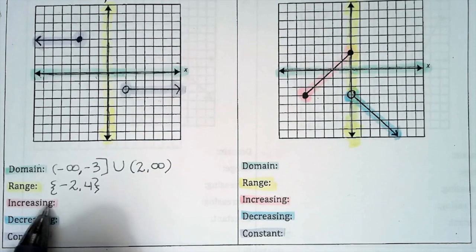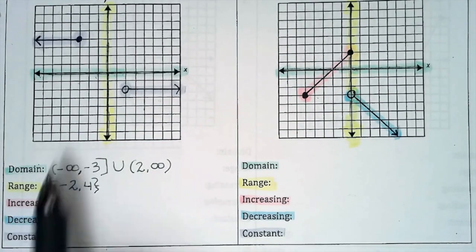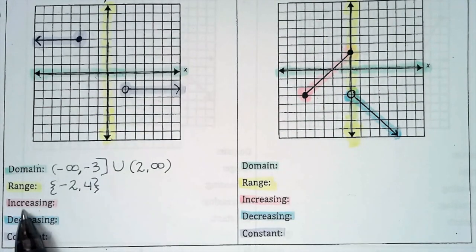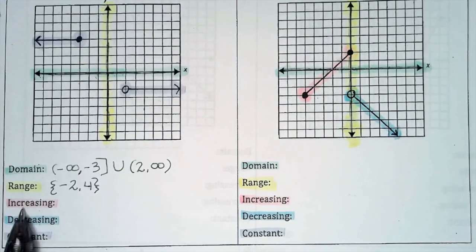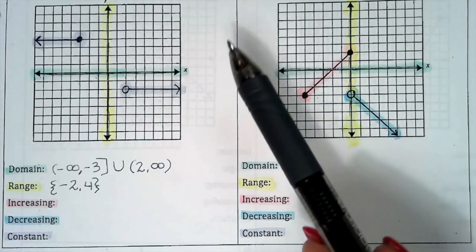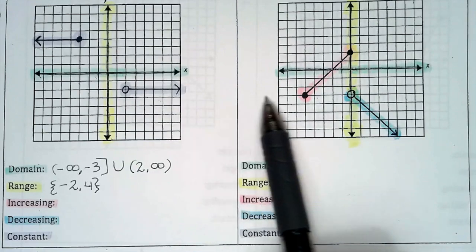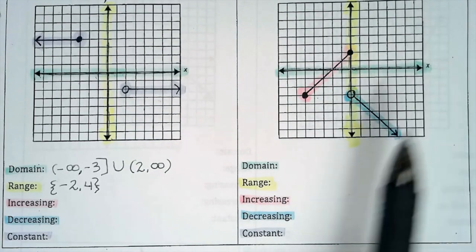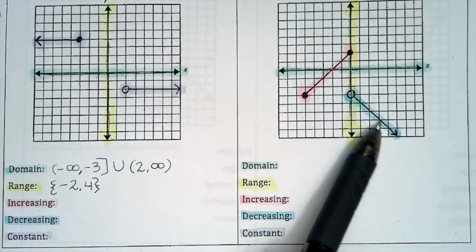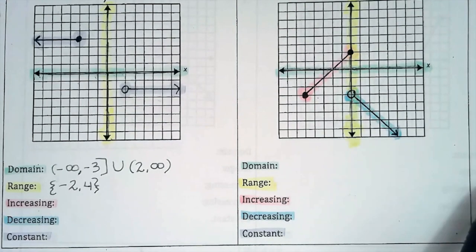Now we're going to talk about increasing, decreasing, and constant. A function, and I'm even going to point at the other picture. A function will be increasing when it has a positive slope. It doesn't need to be linear. It could be curved, but it needs to look like it's going up when we move from left to right. So I already see that over here on this piece. As you move from left to right, it is increasing. You wouldn't say that this is increasing, because you're going from left to right when you describe it.